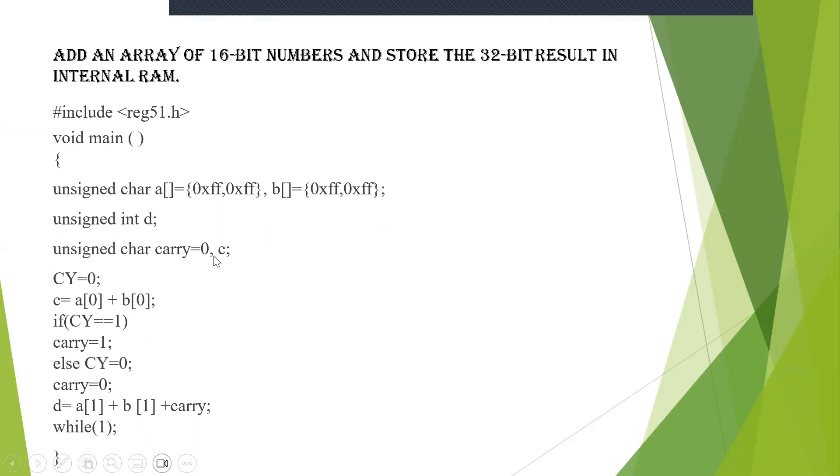Now here you can see cy=0. That is, when you're adding, carry can be 0 or can be 1. So if it is 0, then the carry bit will be left as such. If it is 1, then 1 will be stored in the carry bit. For performing the addition of these two numbers, we are going to take c = a[0] + b[0].